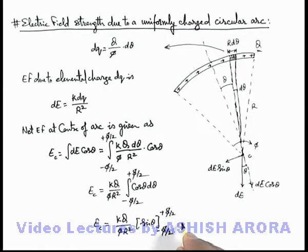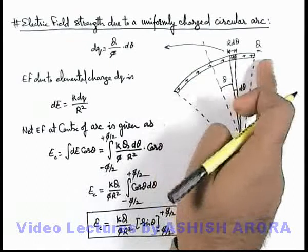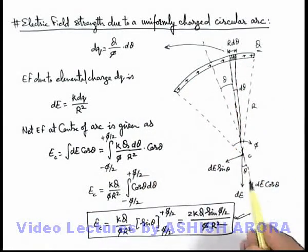So the final result we are getting is this will be sin phi by 2 plus sin phi by 2, it will be 2 k q sin phi by 2 upon phi r square. This will be the result of electric field due to a charged uniformly charged circular arc at its center if it is subtending an angle phi at the center of the arc.